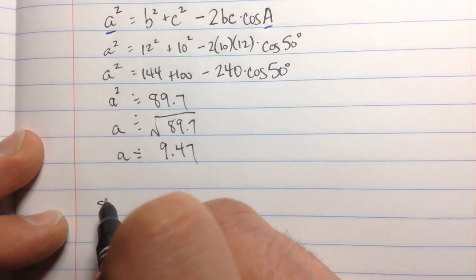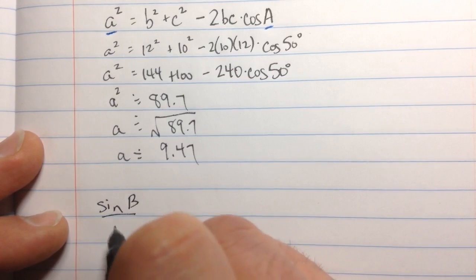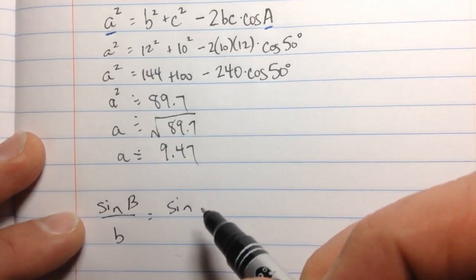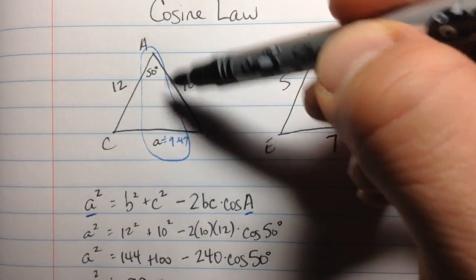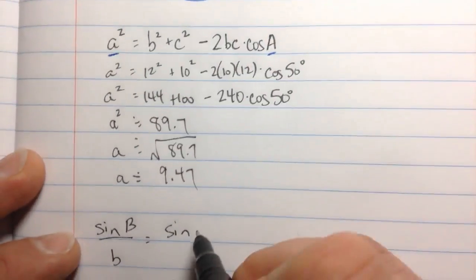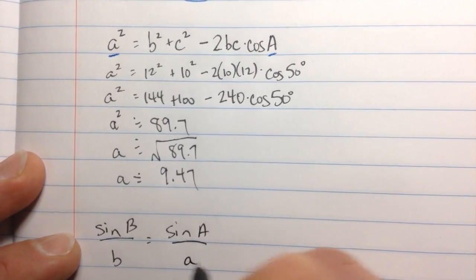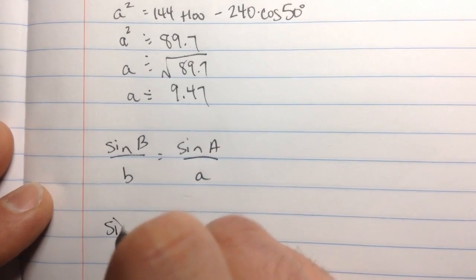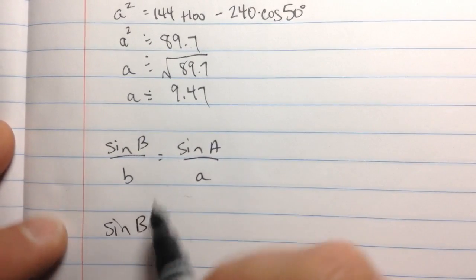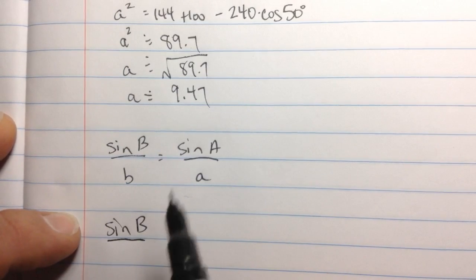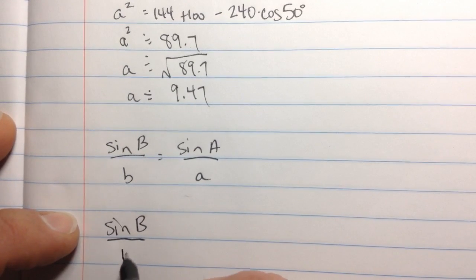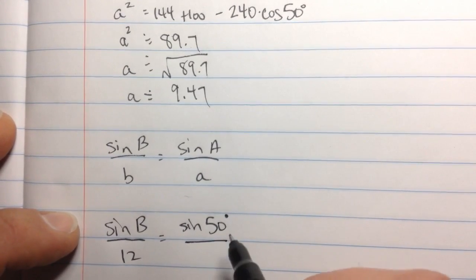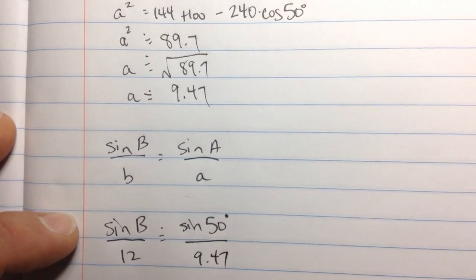So, to find angle B, we're going to use the sine law. The sine law says that sinB/b equals sine of any other angle over its corresponding opposite side. We're going to choose the one that we know. We know angle A and side A. So, sine of angle B divided by little b, that is 12, equals sine of 50 degrees, divided by little a, which is 9.47 approximately.